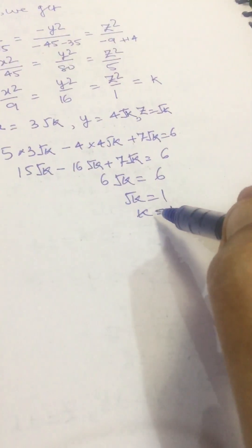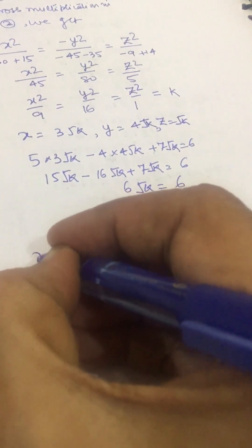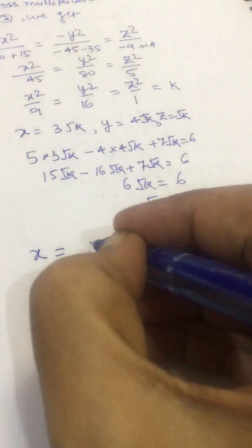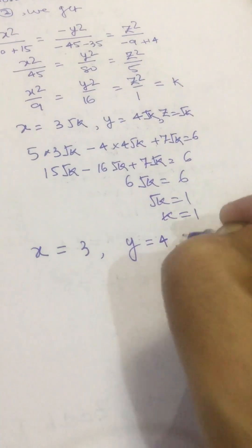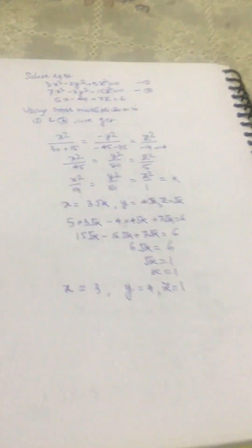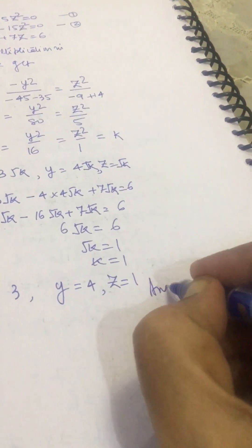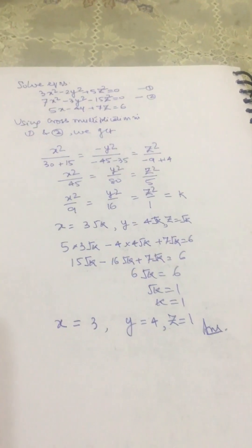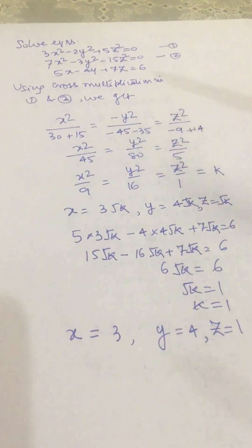Putting k equal to 1 back into our expressions, since √k is 1, we get x equal to 3, y equal to 4, and z equal to 1. So dear friends, this is how we can solve this system of equations using cross multiplication on equations 1 and 2, which makes it quite easy.